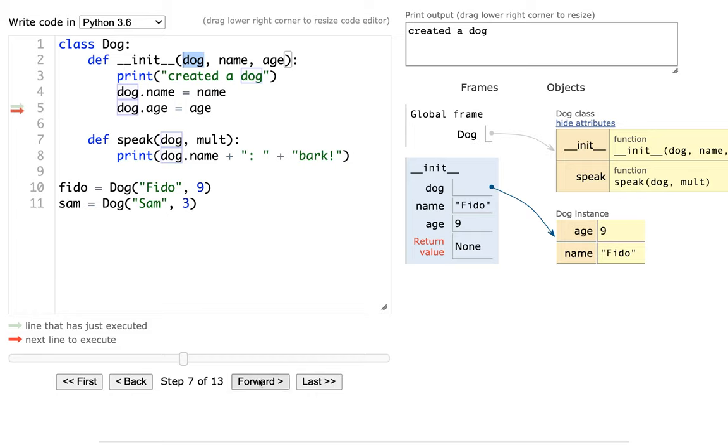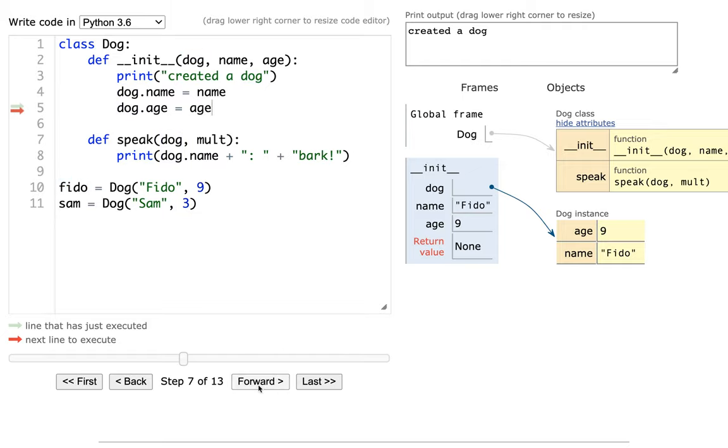Okay, and notice that even though there's no return here, I'm automatically returning back my dog object to go into Fido, right? So two things happen automatically, right? The dog was created for me and I can think of the dog as automatically being returned. So now Fido refers to that new dog object over on the right.